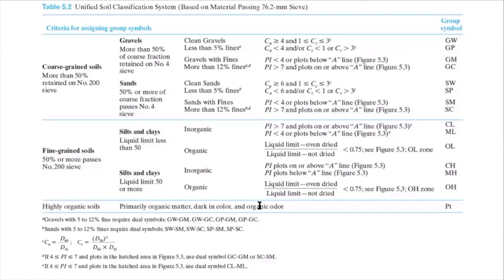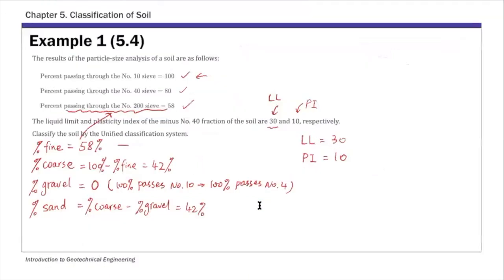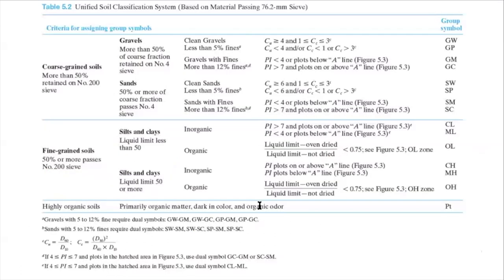This is the two broad categories. For our soil, example one, percent of fine 58. So more than half of the soil is fine. So that means you use fine grained soil.